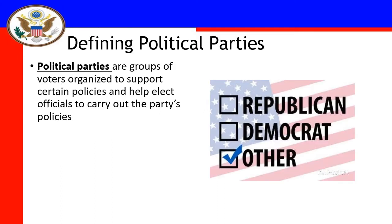The first thing we have to do when talking about this brand new subject, just like any subject, is define the terms. The key term today is a political party. A political party is really just a group of voters that back and support certain policies. They help certain people get elected so that they can get these policies carried out. It's not just Republicans and Democrats — there are many other choices.